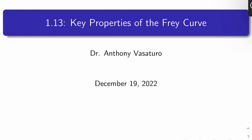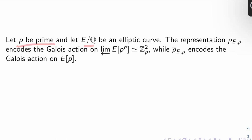All right, so let's recall. Let's let P be a prime. Let's let E over Q be an elliptic curve. The representation ρ_E,P just encodes the Galois action on the inverse limit over N of the P to the N torsion of E, which is isomorphic to Z_P squared, where Z_P is the P-adic integers.